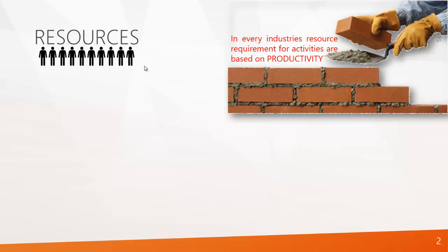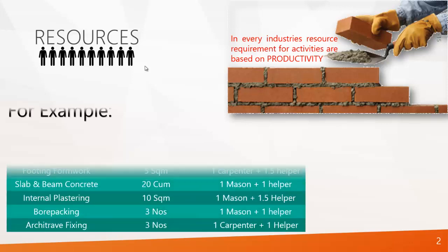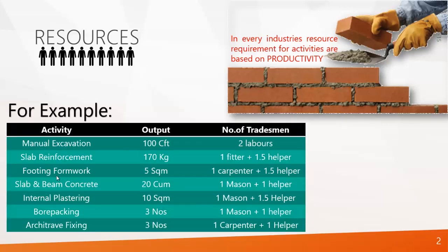In every industry, resource requirements for activities are based on productivity. Here is an example from my experience. For an activity of manual excavation, to do 100 cubic feet, you require 2 laborers. Similarly, to do 170 kg of slab reinforcement, you require 1 fitter and 1.5 helpers.